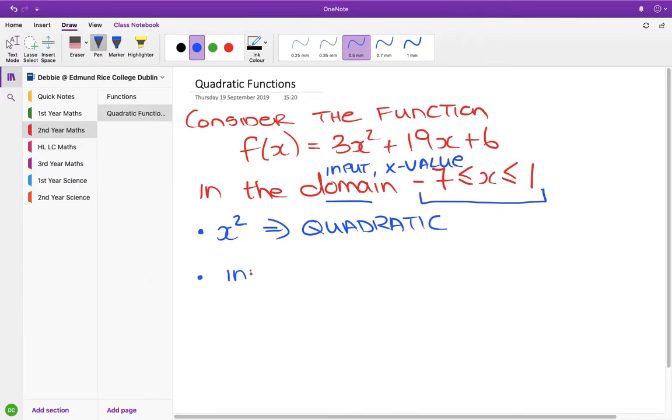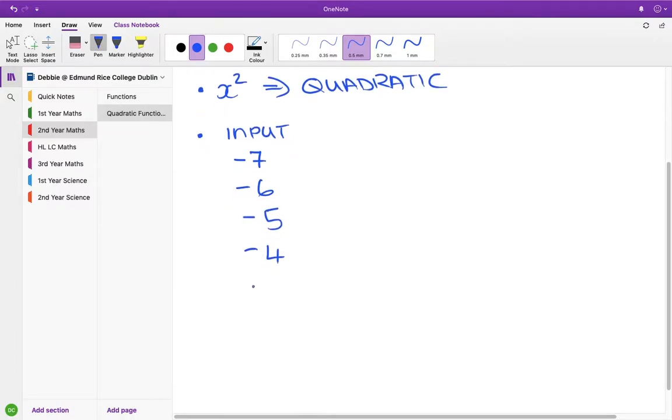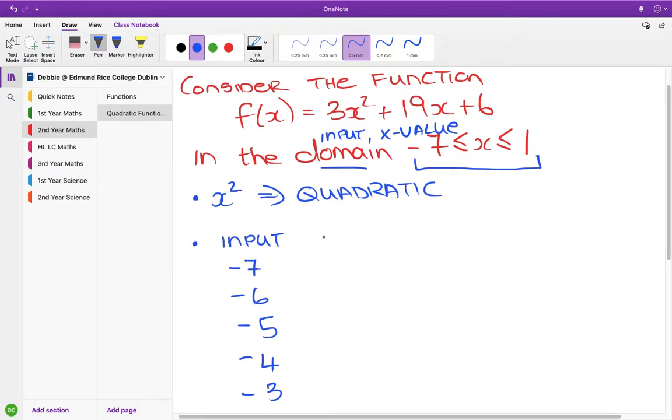So our inputs are minus 7, minus 6, minus 5, minus 4, minus 3, minus 2, minus 1, 0 and 1. You can input them into your rule, and the rule is 3x squared plus 19x plus 6, and then you end up with your output.